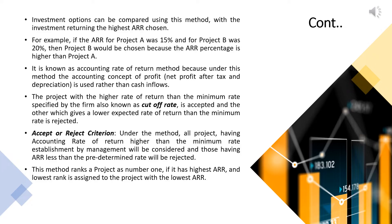Projects that give a lower expected rate of return than the minimum rate are rejected. All projects having an accounting rate of return higher than the minimum rate established by management will be considered, and those with ARR less than the predetermined rate will be rejected. This method ranks projects with the highest ARR as number one, and the lowest rank is assigned to the project with the lowest ARR.